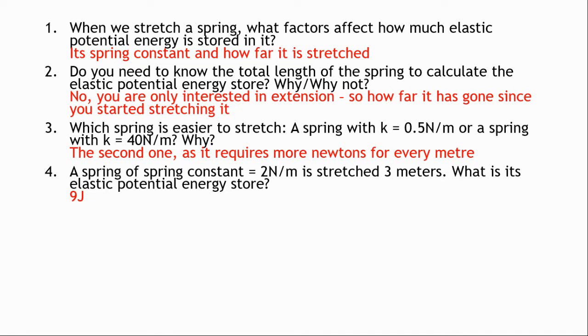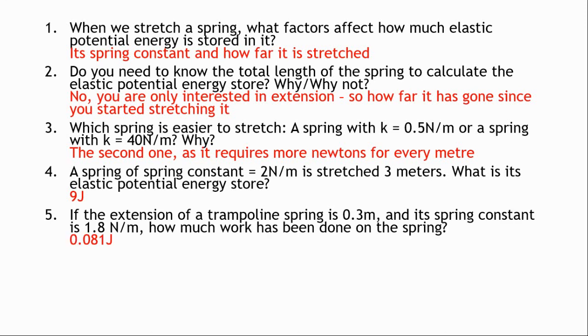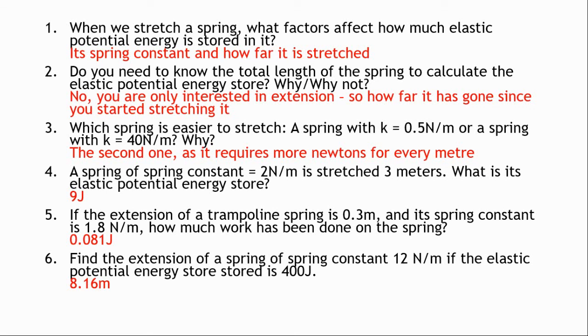You've then got a spring straight calculation there. And that gives you nine joules. And then again, another straight calculation there. It gives you 0.081 joules. And then you've got a spring constant of 12 newtons per meter. Potential energy store is 400 joules. That you'll need to do a rearrangement. And you'll need to square root at the end to get 8.16 meters.